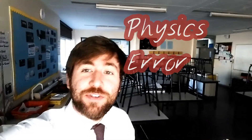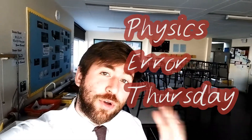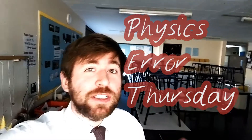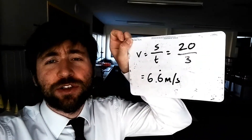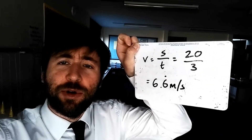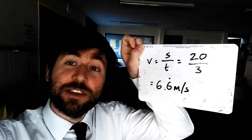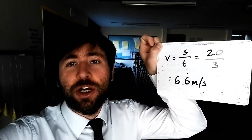So today is Physics Error Thursday, and today I've got for you Rounding Error. So let's say in a simple calculation of velocity — something's gone 20 metres in 3 seconds. You're going to do velocity as displacement over time, 20 divided by 3, and the calculator's going to say 6.6 with a little dot on top — the recurring sign.